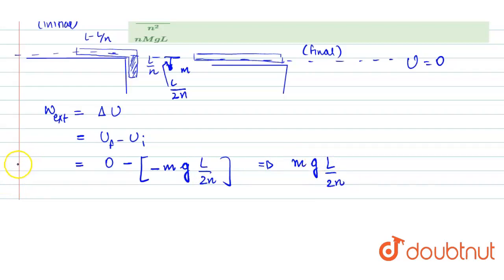Now all we have to find is the value of small m in terms of capital M. For that, we can use the unitary method: if L length has mass M, then unit length has mass M by L. So L by n will have mass M by L into L by n, which is capital M by n.